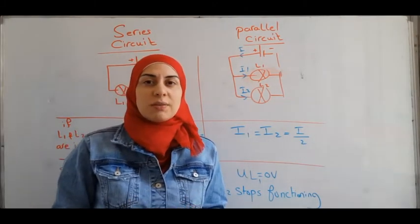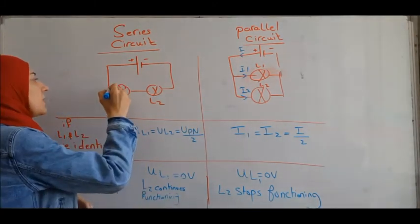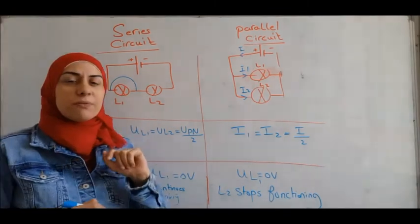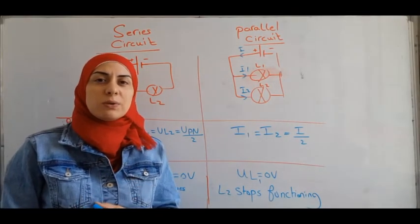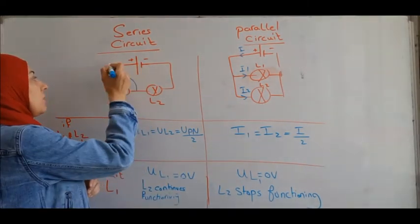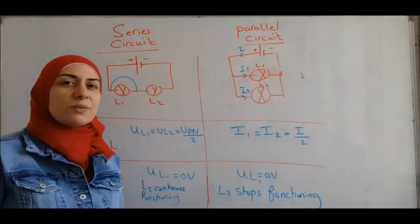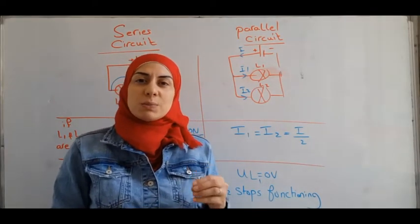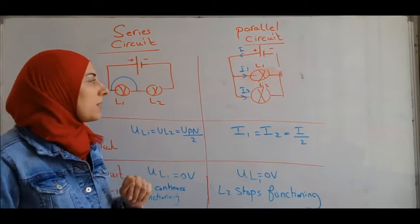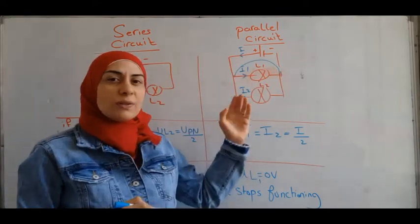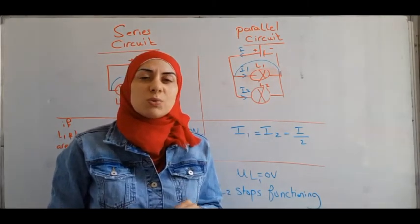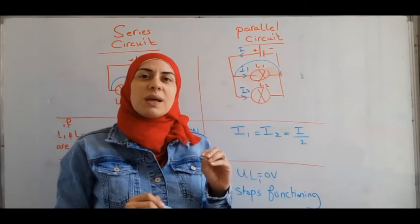What happens if we short circuit lamp L1? In a series circuit, UL1 becomes zero because the voltage across L1 equals the voltage across a wire — zero volts — so L1 stops functioning. However, L2 continues functioning because the circuit remains closed, unless the battery voltage greatly exceeds the lamp's rated voltage. In a parallel circuit, if L1 is short-circuited, the voltage across L1 becomes zero, and since L2 is in parallel, its voltage also becomes zero — so both lamps stop functioning.